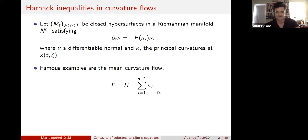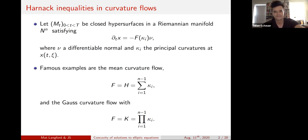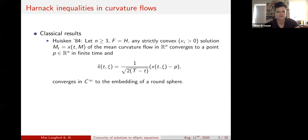There are nonlinear versions as well. For example, for the Gauss curvature flow you take the determinant of the second fundamental form. There are many other versions of such flows, and there are classical results about these evolution equations. Probably the most famous one is the first result by Gerhard Huisken in the 80s.